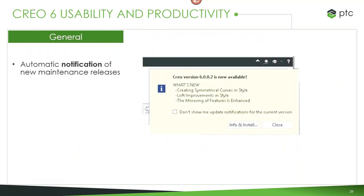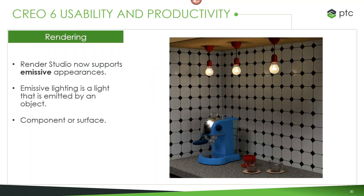A small but requested change is automatic notification for new maintenance releases. Since we're on a faster release schedule — yearly releases with maintenance versions every few weeks to months — this keeps you informed when a new version is available, though you can disable it if you prefer to stay on a particular version longer. In the rendering world with our Render Studio application, we added the emissive option for parts, so you can make it appear that light is being emitted from an object, applicable to components or surfaces.